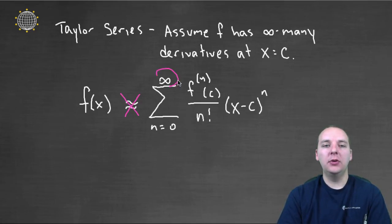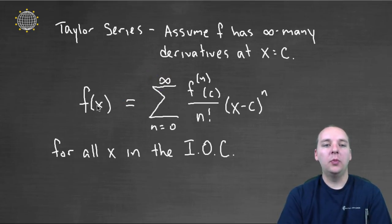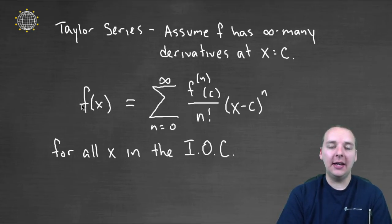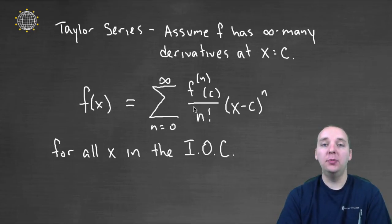If you let this go towards infinity, then what you actually have is an equality with f. These guys are actually the exact same. So you can represent, let's say, like e to the x, by a power series, by doing this process here.